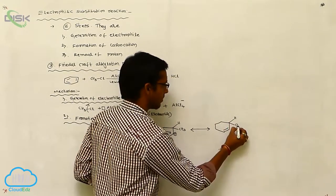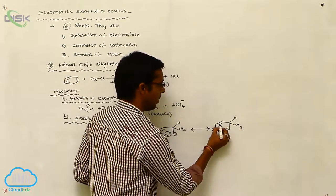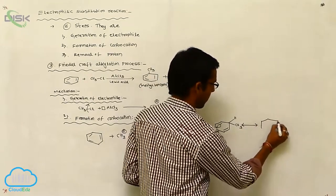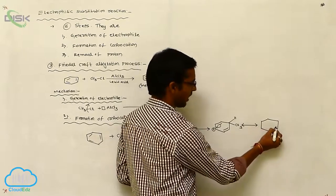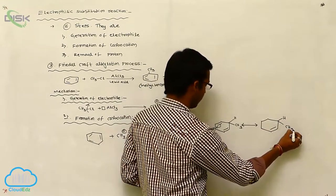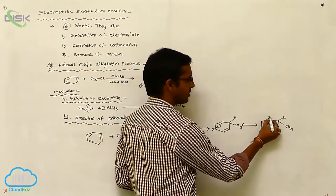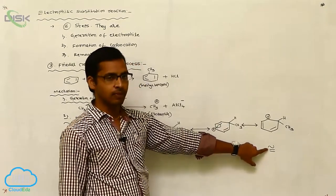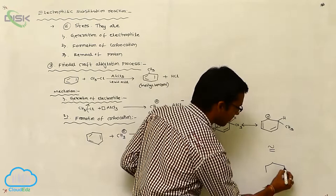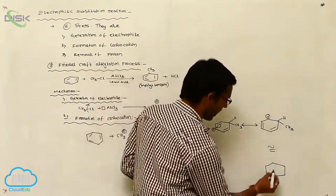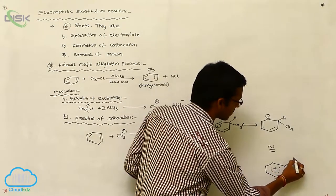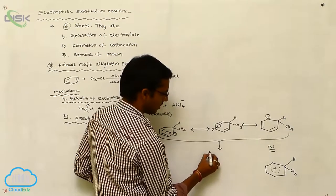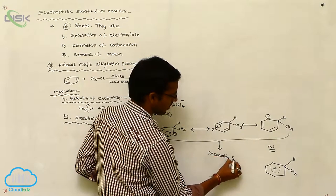The pi bond shifts, and a positive charge is generated on the carbon. The methyl group and H are attached to the ring. As the pi bond shifts further, another carbon gets the positive charge. These structures represent the resonating structures of the carbocation intermediate. The resonance hybrid of the Friedel-Crafts alkylation intermediate shows the positive charge delocalized around the ring, with H and the methyl group attached. This is your resonating structure.